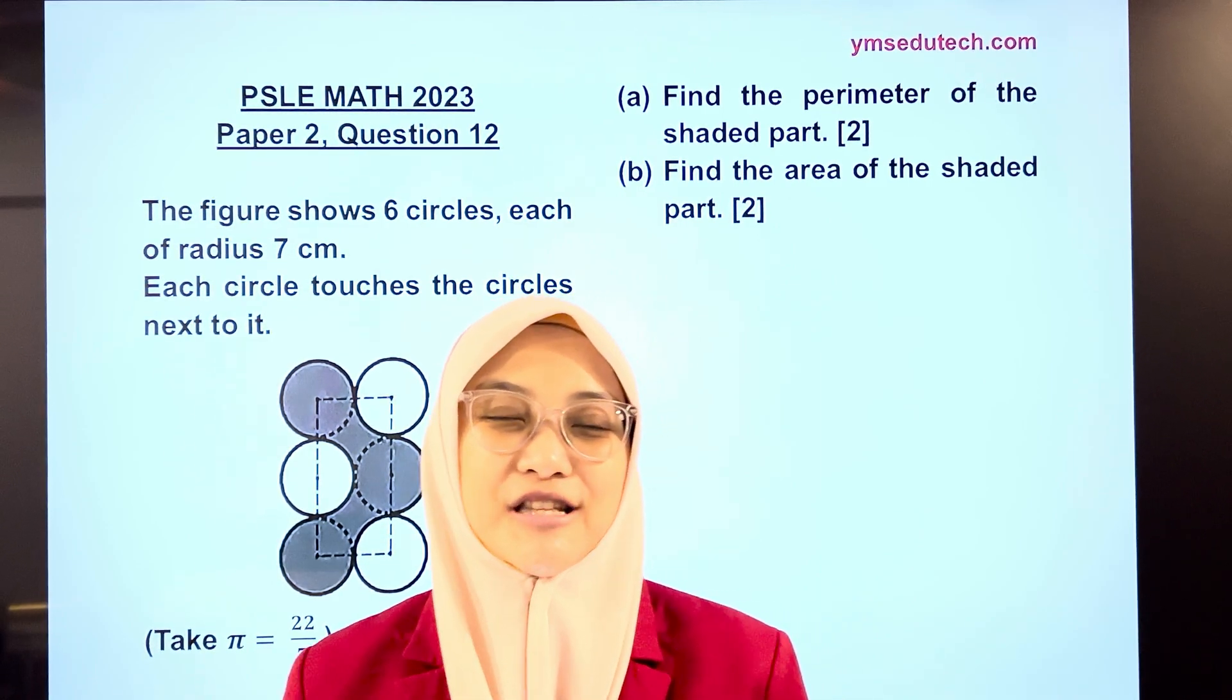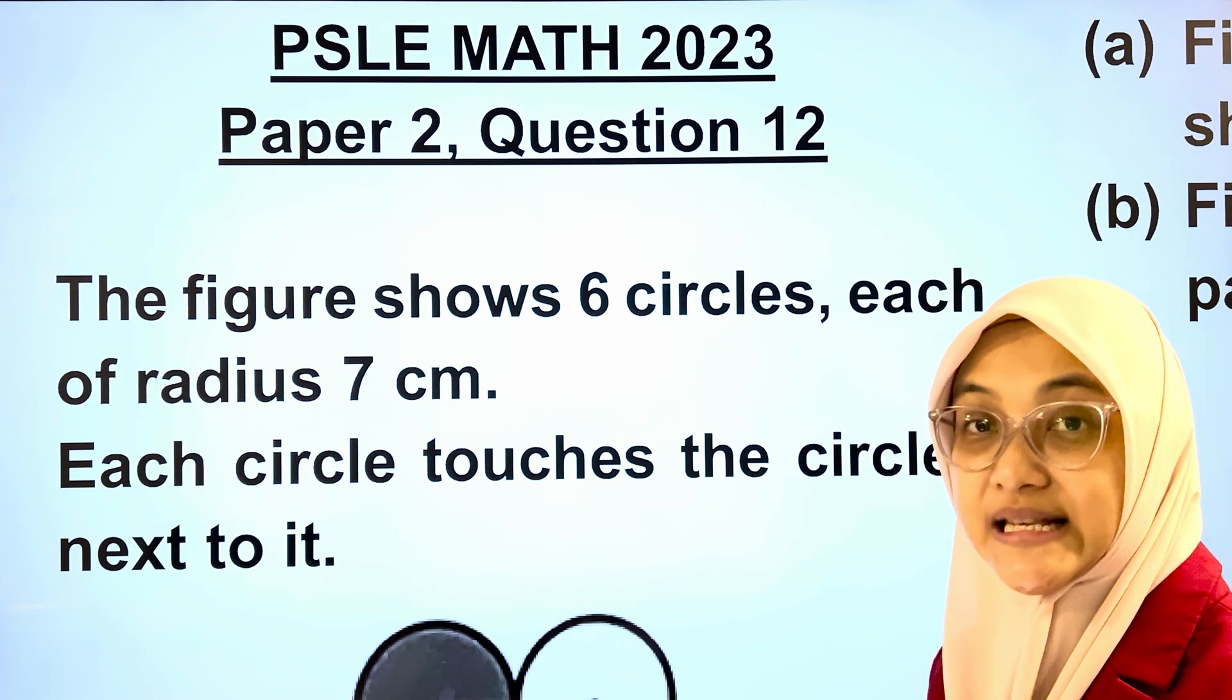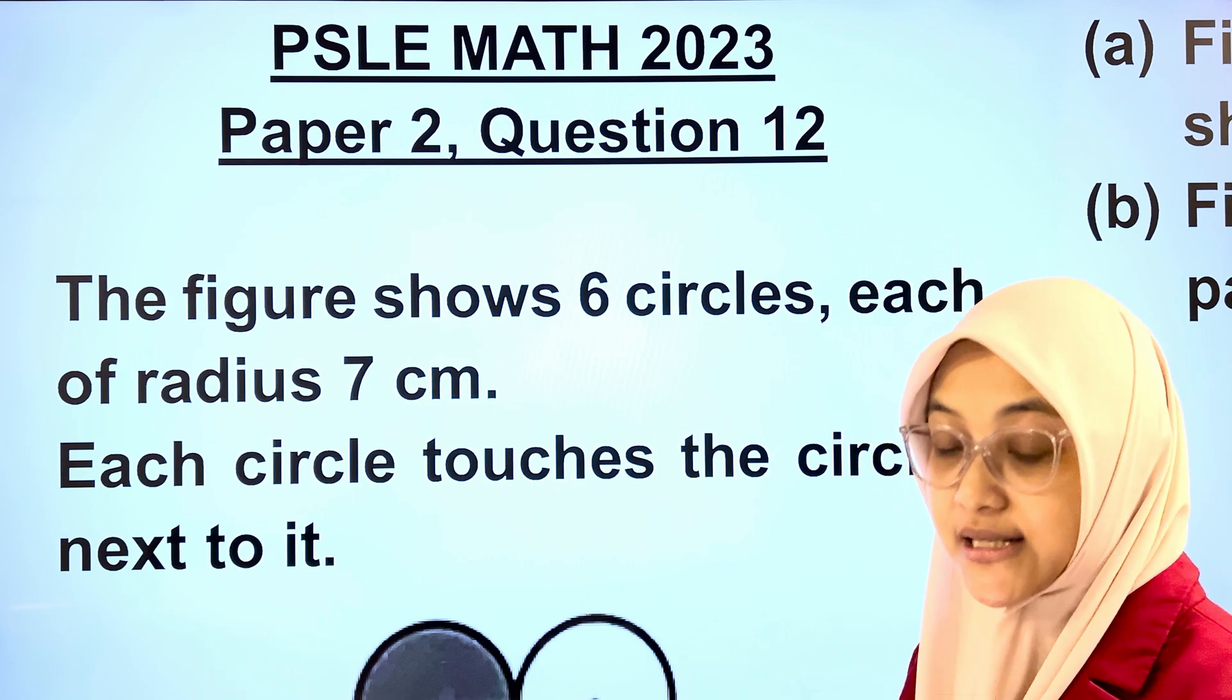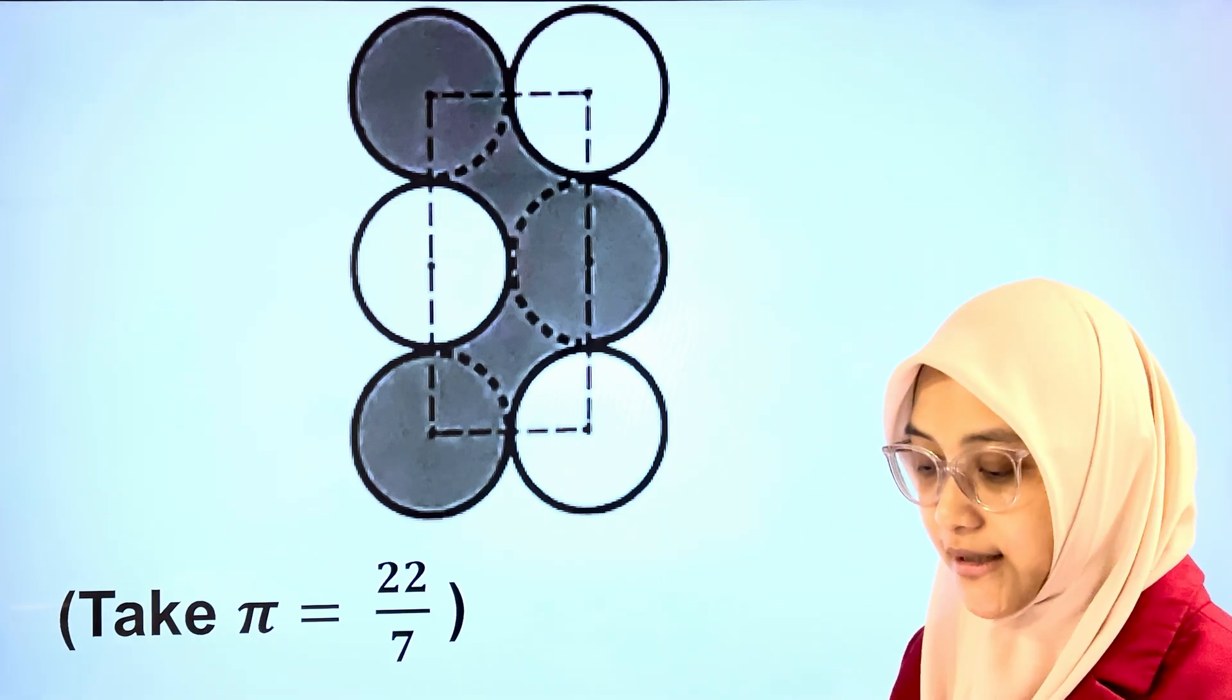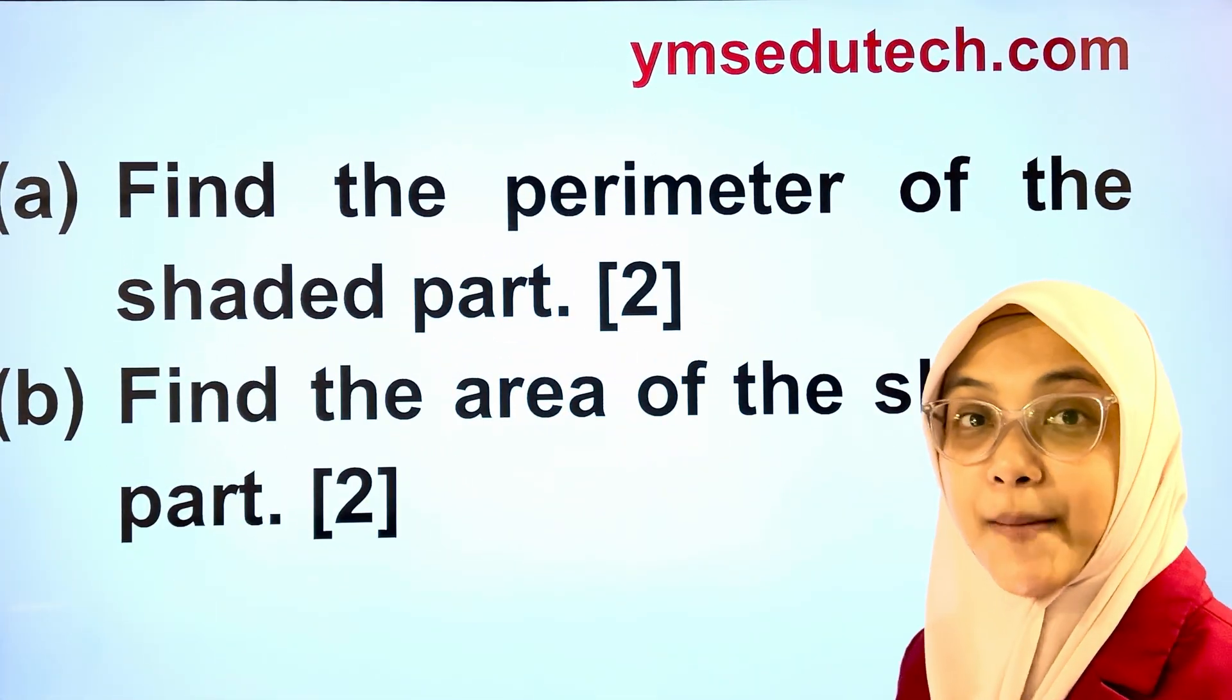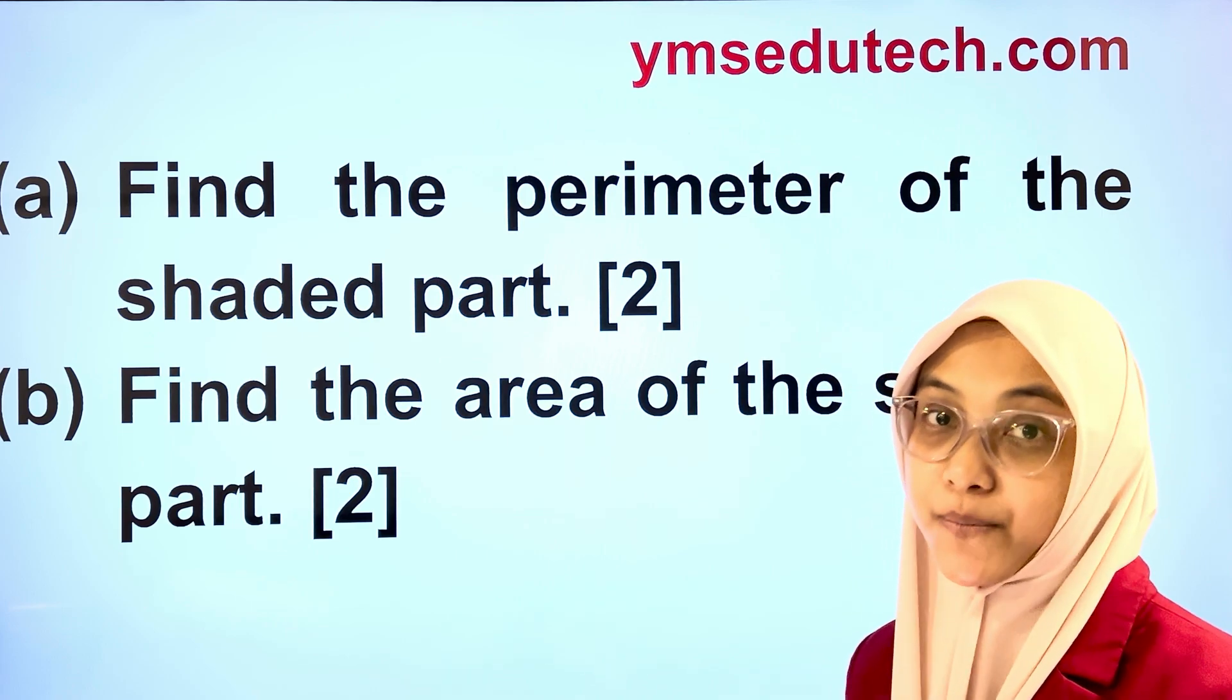Let's read the question together. The figure shows 6 circles, each of radius 7 cm. Each circle touches the circles next to it. Take pi to be 22 out of 7. Part A, find the perimeter of the shaded part. Part B, find the area of the shaded part.